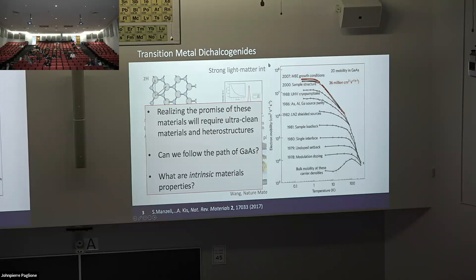Over about 30 years we see one, two, three, almost four orders of magnitude improvement in low-temperature mobility in GaAs. The record is now something like 30 million — mean free paths of millimeters — which is absolutely amazing. With that you get two Nobel prizes and a ton of amazing quantum science.